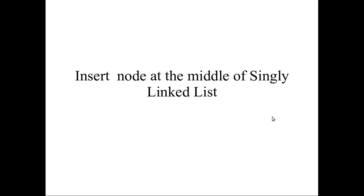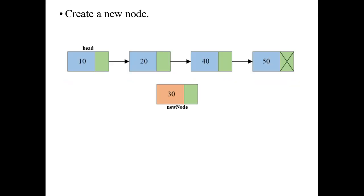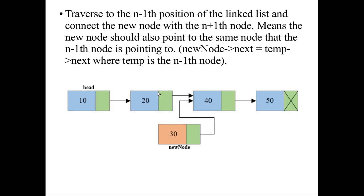Next is inserting a node at the middle of the singly linked list. First, create the new node — here I am creating node 30. Then you have to decide where to insert it: between 10 and 20, between 20 and 40, or between 40 and 50. Once you decide, you have to traverse the list up to the (n-1)th position — if inserting between 20 and 40, you traverse until you reach node 20.